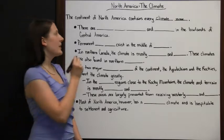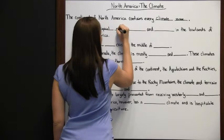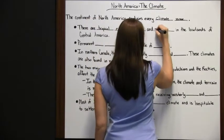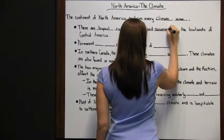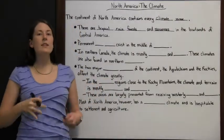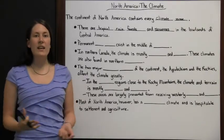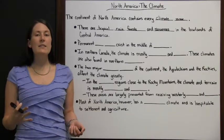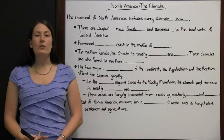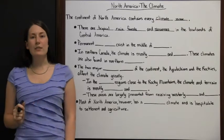There are tropical rainforests and savannas in the lowlands of Central America. Tropical rainforests have lush greenery and lots of rain. Savannas are wide open grasslands where mainly grasses and other things can grow — wide open space that receives enough rainfall to support that growth. Those kinds of areas exist in Central America.